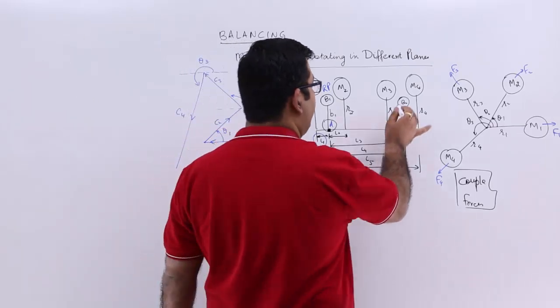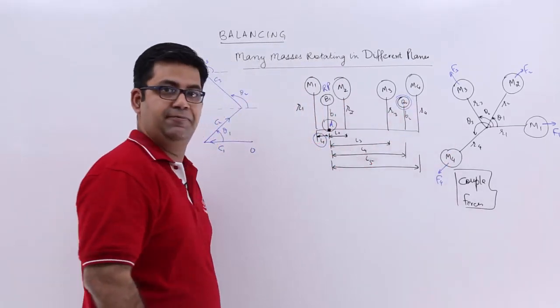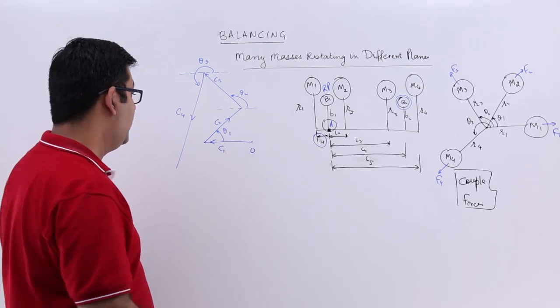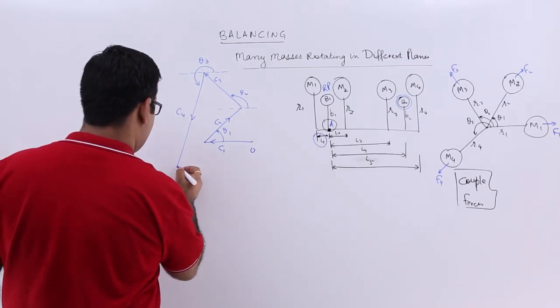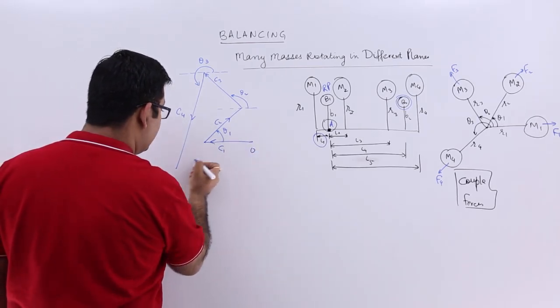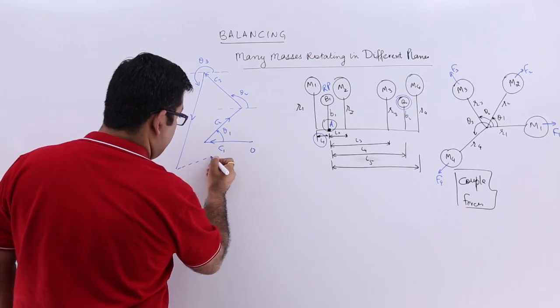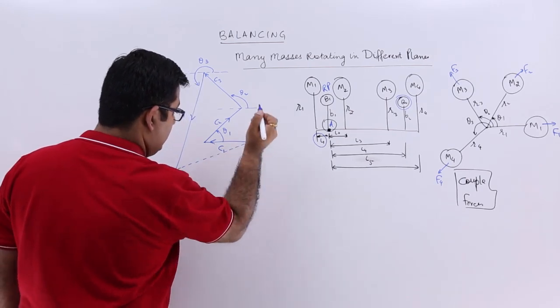There is one couple which is left due to this mass B2. So you will have to join O to this point.